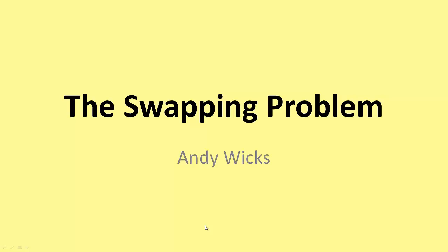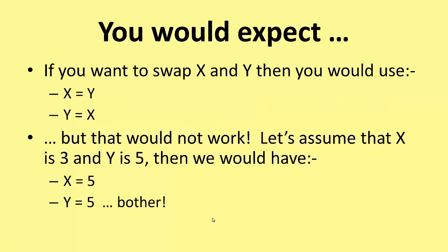That sounds as if it ought to be quite simple, so let's have a look at what we do here. If you want to swap X and Y, you might think you'd want to say X equals Y, Y equals X. But that wouldn't work. Let's assume that X is 3 and Y is 5. Then we would have X equal to 5, because that's what's in Y, and then Y equal to 5, because that's what's now in X.